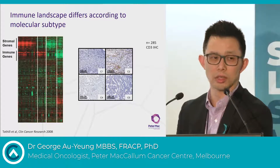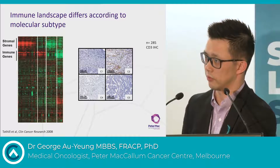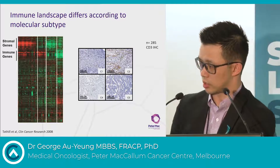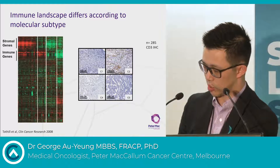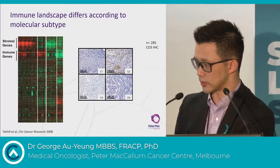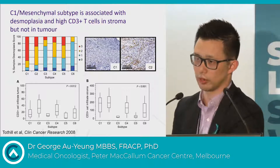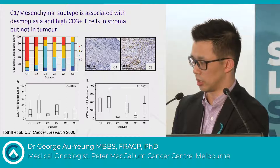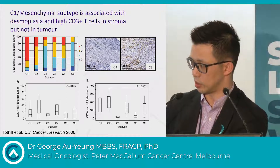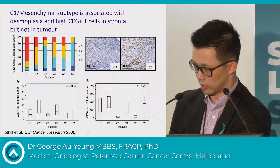Trying to put molecular subtype and immune landscape together, it's quite clear that the four different molecular subtypes vary in their immune landscape. Figures from the original Tothill paper show that the C1 and C2 subgroups express quite high levels of immune-related genes, but the C1s differ because they express very high stromal-related genes. The C1, or mesenchymal subtype, is associated with desmoplasia and very high CD3-positive T cells in the stroma but not in the tumour — you can see on the H&E section many brown dots in the C2, but in the C1 they're all stuck in the stromal component.